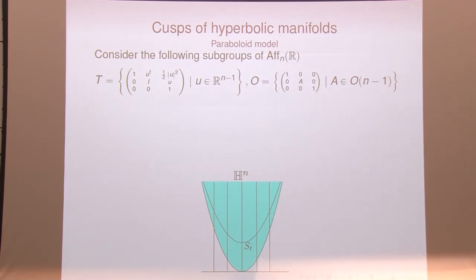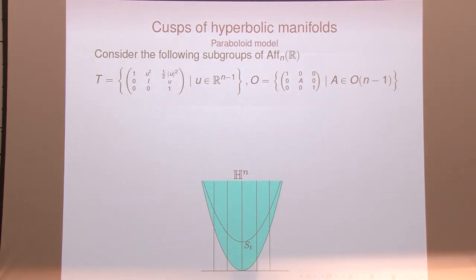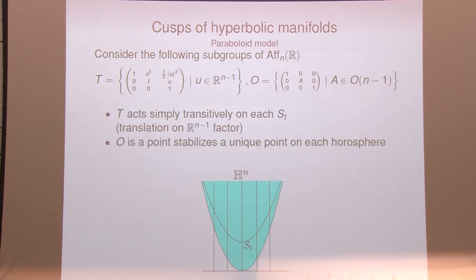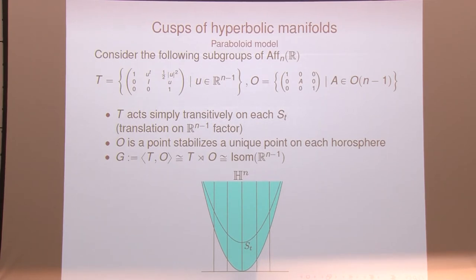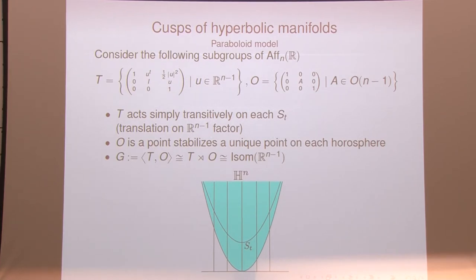There's also a group O, where the lower block acts as a rotation in the horizontal direction. These groups have nice properties: if you take the group generated by them, you get a semi-direct product, and you end up getting all the isometries of the horospheres. For hyperbolic cusps, this geometry descends to nice quotients. If we take a lattice in the isometry group of H^n and quotient hyperbolic space by it, we get a hyperbolic orbifold. There's a nice thick-thin decomposition that topologically decomposes the quotient into a compact piece and a disjoint union of cusps.